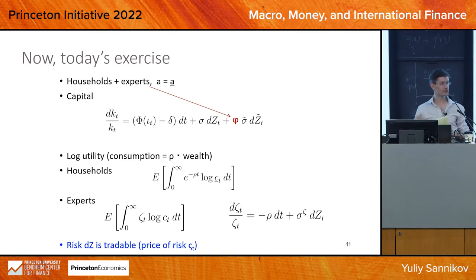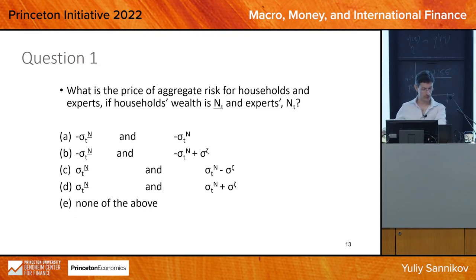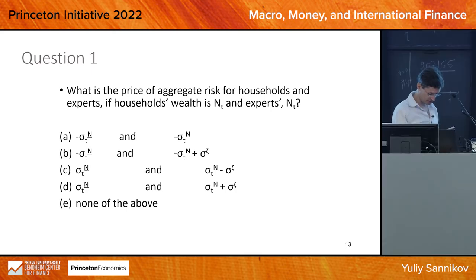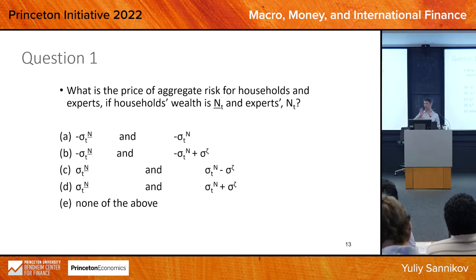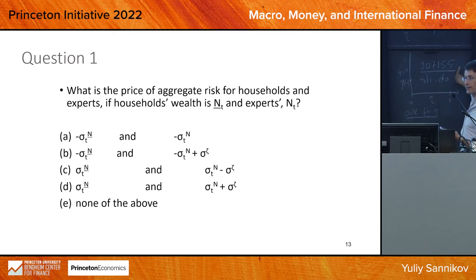The first question: what is the price of aggregate risk for households and experts? N-bar denotes the household's total wealth and N denotes the experts' total wealth. Think about which answer you would choose, then go to your mobile phone — it's completely anonymous. Go to sli.do and enter the number 907155.